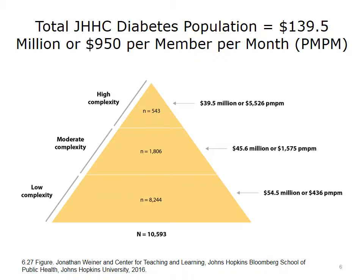As shown from the previous Medicare analysis, the local situation is quite similar for the denominator population — those patients who are capitated with the Johns Hopkins MCO. The highest risk individuals use a large amount of services. A total of $139 million of cost is expended by a relatively small group of 10,500 individuals. The per-member-per-month, PMPM, breakdown in costs shows individuals at each level of the pyramid. Specifically, 543 individuals in this cohort who have diabetes and are also highly complex actually cost the system $39 million over the year, or over $5,500 per month per patient.